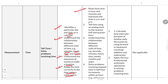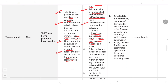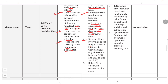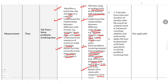Read clock time in hours and minutes; express them in AM and PM. Tell time using an analog clock to the nearest half and quarter hour. Understand the relationship between seconds, minutes, hours, days, weeks and months. Solve problems involving elapsed time in half-hour increments, such as the difference between 3:00 and 3:30, 3:15, or 3:45. Relate the 24-hour clock with the 12-hour clock. Calculate time intervals or durations of familiar daily life events using forward and backward counting. Apply four arithmetic operations to solve problems involving time.